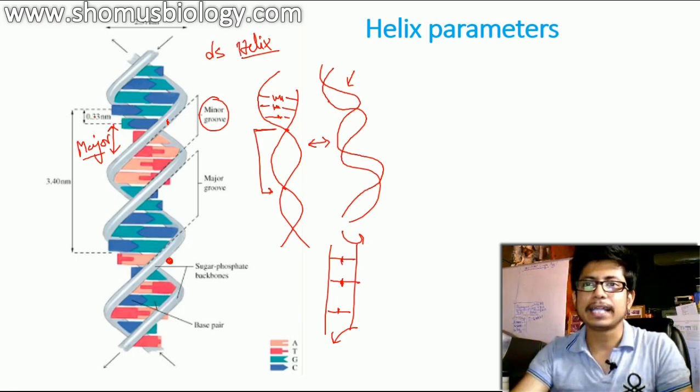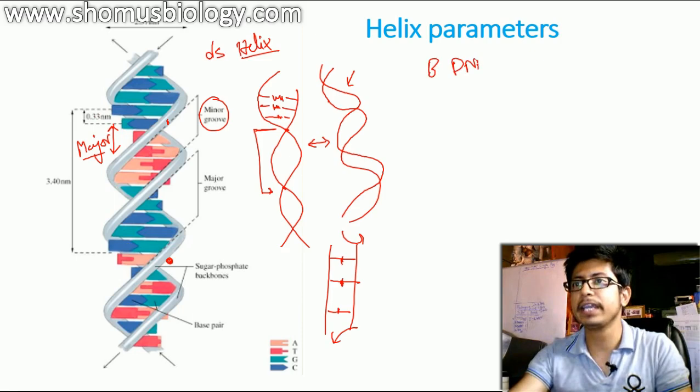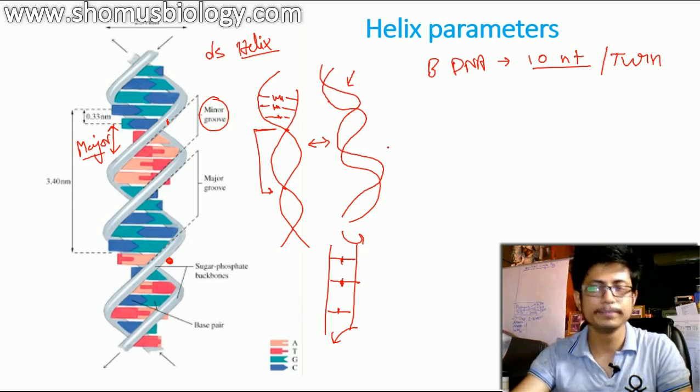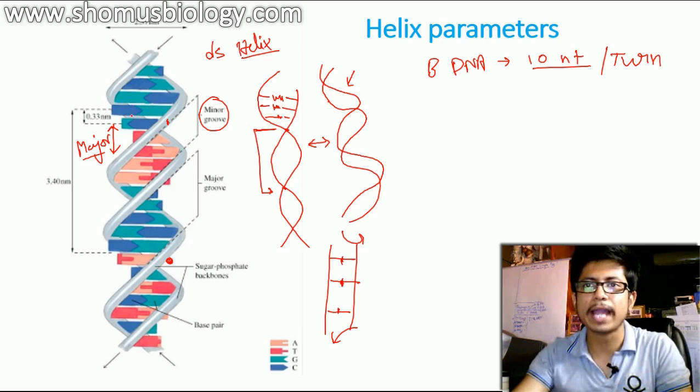Another thing is that normal structure of the DNA, that is known as the B DNA, contains almost approximately 10 nucleotides per turn. Now, if you look at here, there is a distance between two adjacent double base pairs. You see, this is a base pair. This is another base pair. So there is a small difference between these two base pairs that is known as the rise.